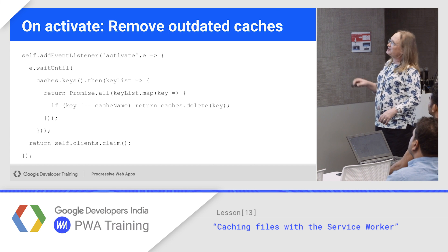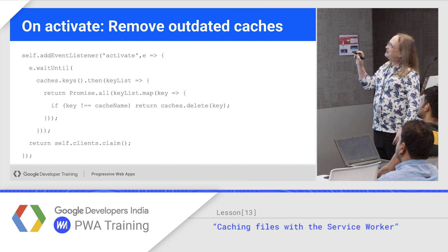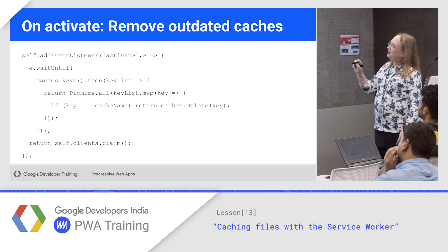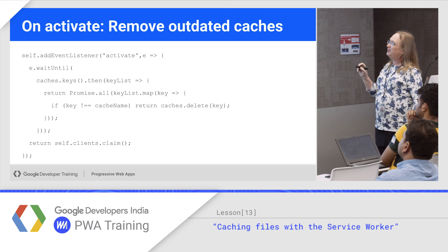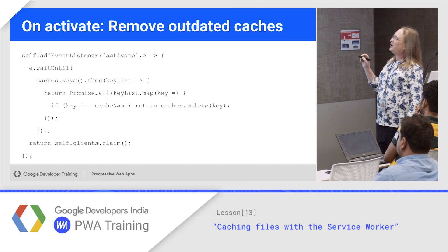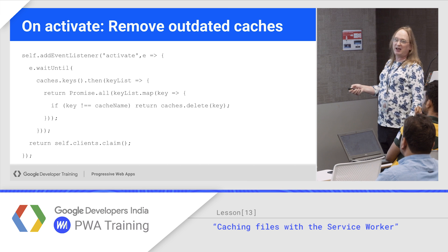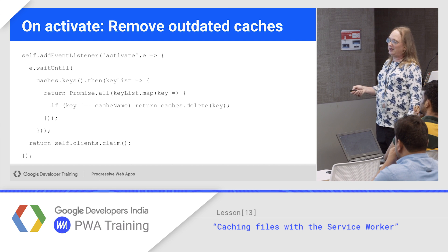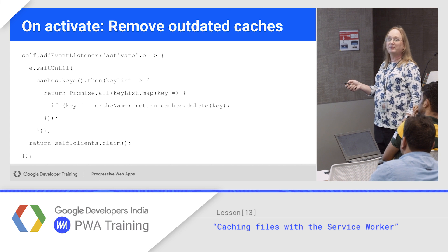On activate, remove outdated caches — get all of the keys, have the current cache name, and if the key doesn't match the current cache name, meaning the cache has a different name, go ahead and delete it. Pretty simple. And then self.clients.claim basically says I want to update all of my clients — every service worker that you're running, all your children — catch up with the current cache.